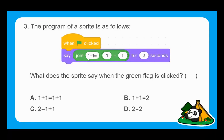Question three: the program of a sprite is as follows — when green flag clicked, say join '1 plus 1 equals' together with the answer of 1 plus 1 for two seconds. What will the sprite say? It is, of course, B: '1 plus 1 equals 2'. It's saying the text '1 plus 1 equals', and then the actual operator is carrying out the mathematical calculation 1 plus 1, which equals 2. So it displays '1 plus 1 equals 2'.